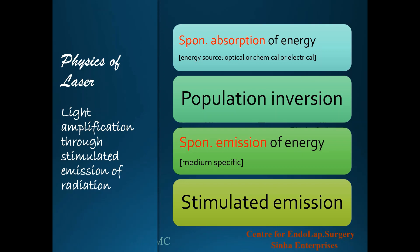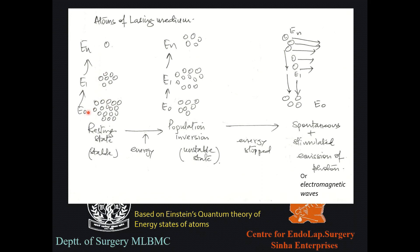In the resting state of a medium, most atoms are at the resting state with very few at higher energy states E1 to En. When energy from any source — light or electrical — is applied, atoms invert: fewer remain in the resting state and more move to higher energy states, creating a population inversion or unstable state in that medium.